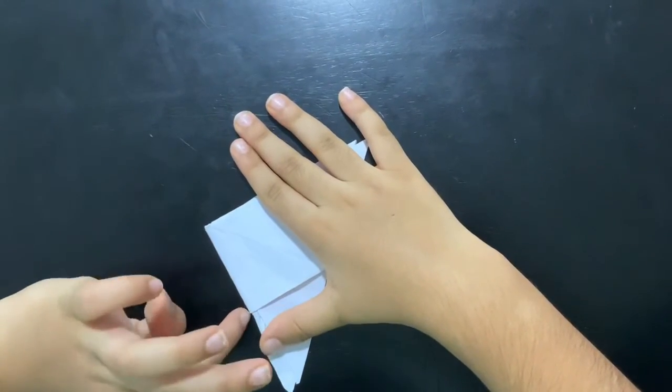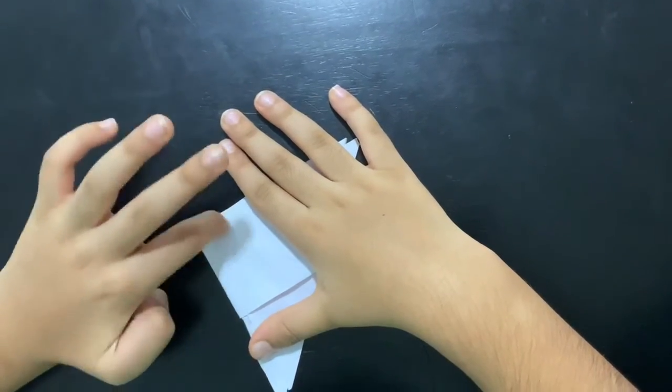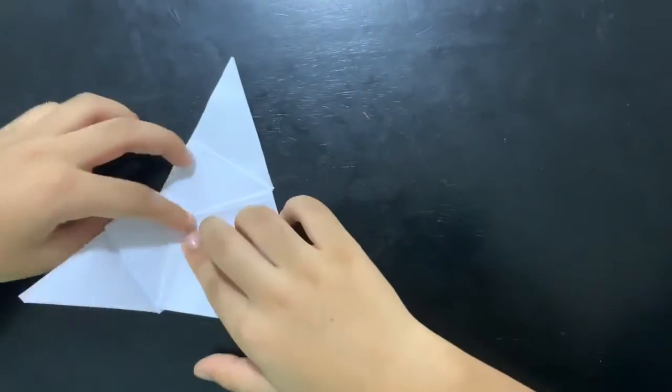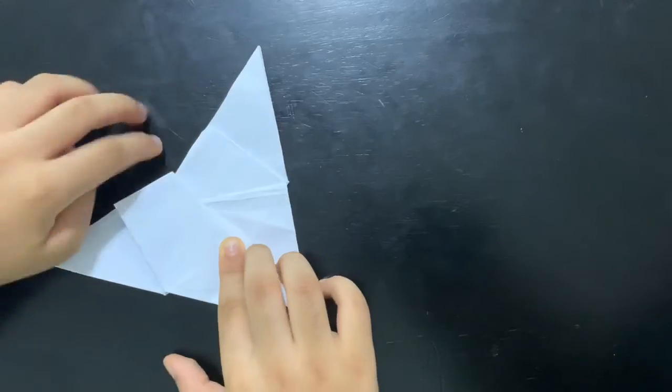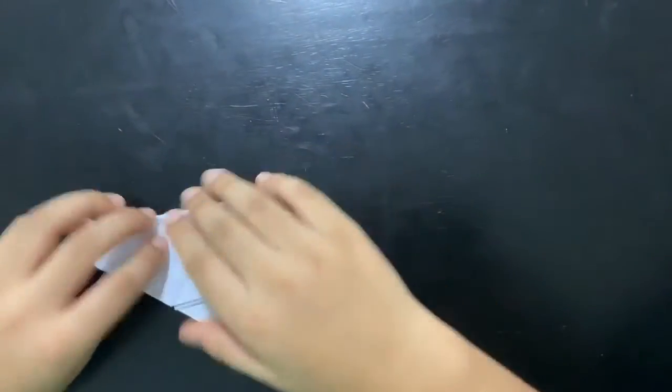Then fold it from this little corner to somewhere like this, just a diagonal line. Like this - an imaginary line, I meant. Same on the other side.